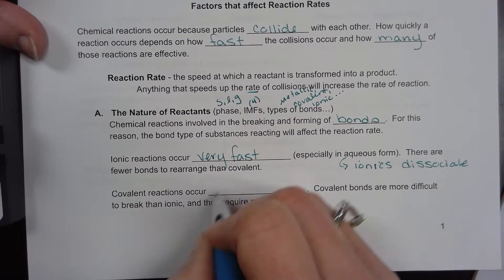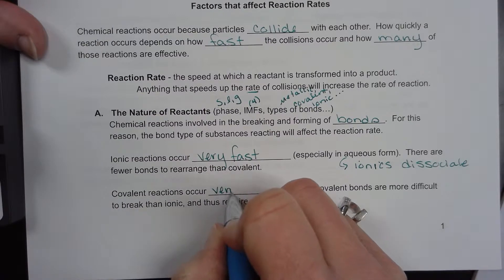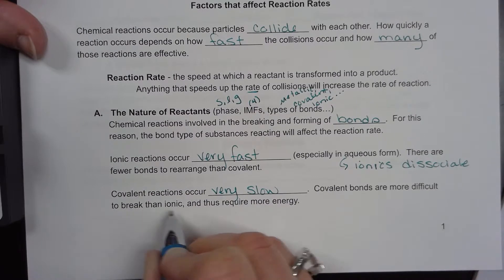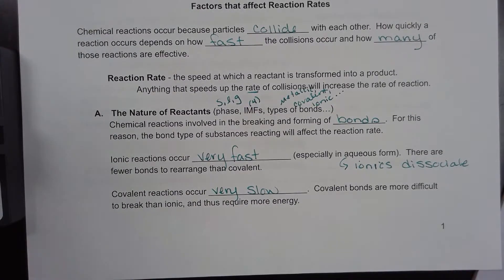Covalent reactions occur very slowly. Covalent bonds are more difficult to break than ionic and thus require more energy.